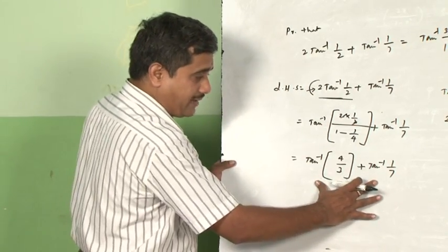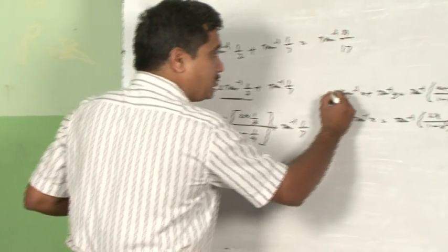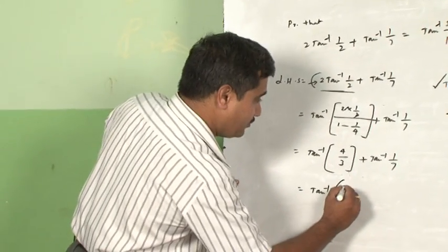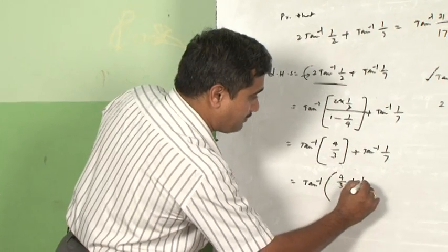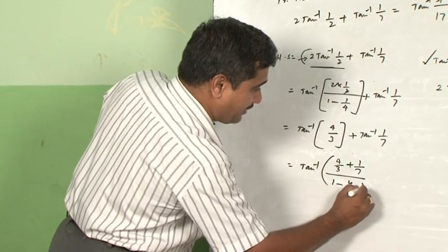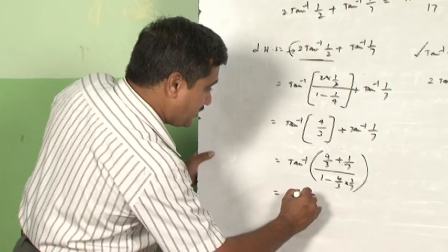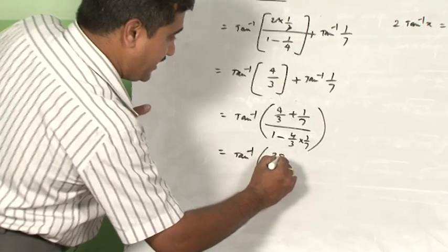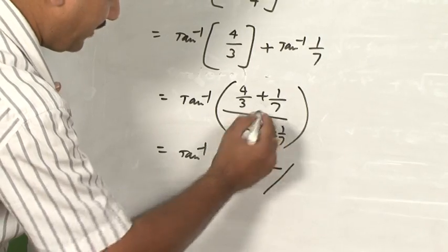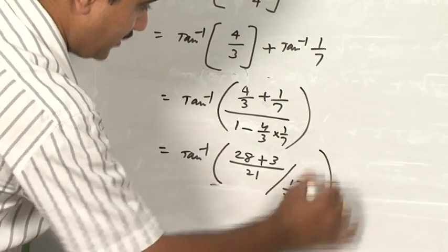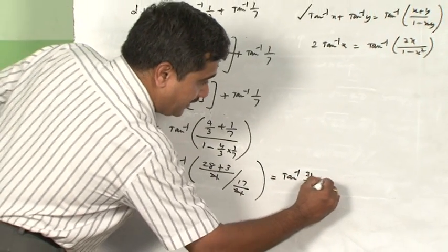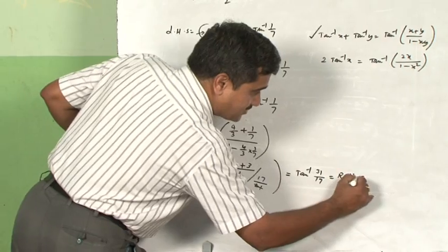I have reduced the structure into this format which resembles the formula already written. Applying the formula tan⁻¹(a) + tan⁻¹(b): it is 4/3 plus 1/7 upon 1 minus 4/3 into 1/7. Resulting tan⁻¹ of (28 + 3)/21 upon (21 - 4)/21. The 21s cancel, giving tan⁻¹(31/17), which is the required right-hand side of the problem.